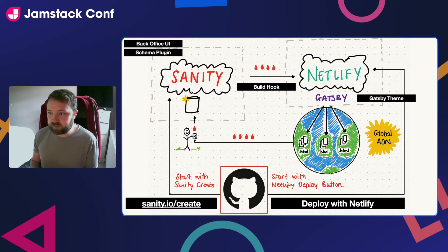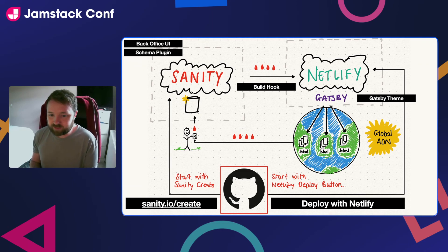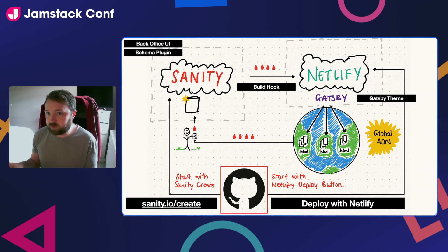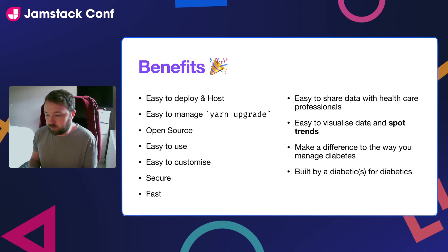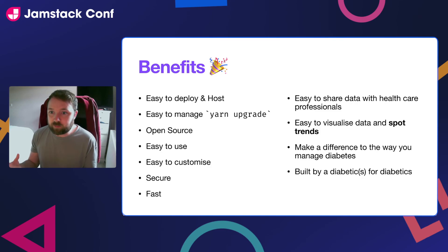We're also going to host the website on Netlify — we'll consider other alternatives too, but I decided to start with Netlify as it's the one I'm most comfortable with. In terms of deployment, we're going to incorporate a Netlify deploy button on the GitHub readme, and I'm also putting together a template for Sanity's create tool, so you could go to sanity.io/create, pick the template from a list, and it would distribute the application accordingly. This gives us an application that's easy to deploy and host, easy to manage via package manager upgrade commands, and open source so the community can contribute.